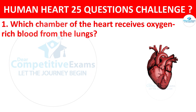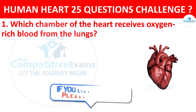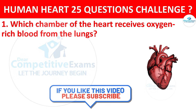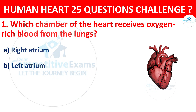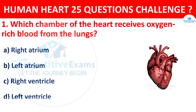Question number 1. Which chamber of the heart receives oxygen-rich blood from the lungs? Options: Right atrium, Left atrium, Right ventricle, or Left ventricle. The correct answer is Left atrium.